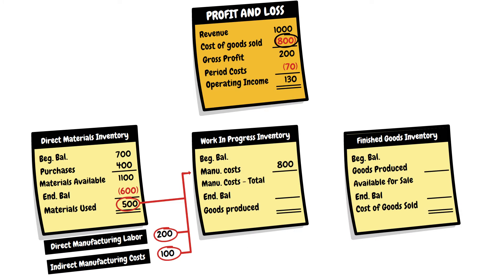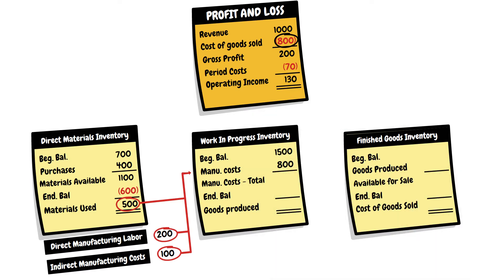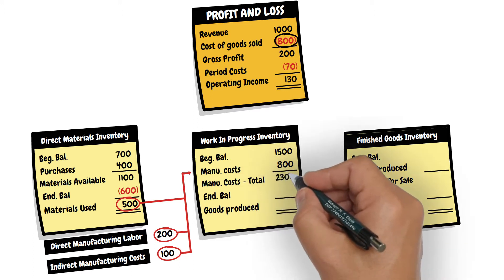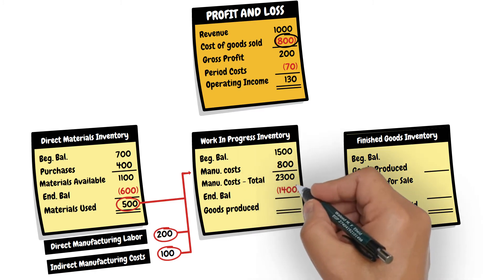There is a beginning balance in the work-in-progress account, which are the manufacturing costs incurred during the previous year for production that is still uncompleted. By adding these two figures, we get the balance of manufacturing costs incurred for production. At year-end, the ending inventory in the work-in-progress account was 1,400.